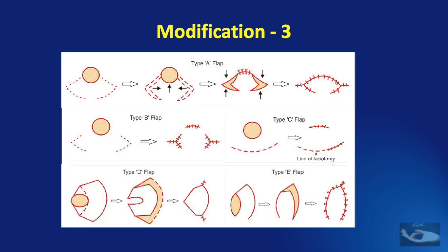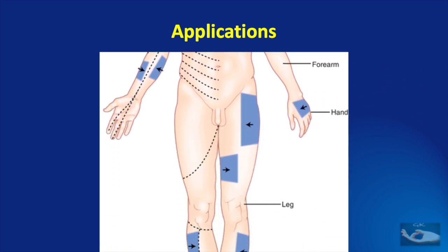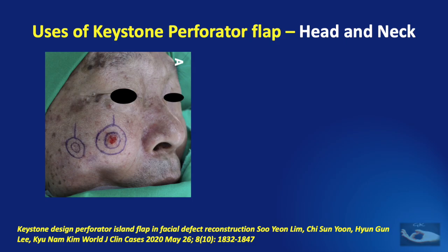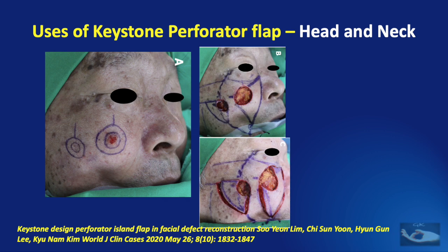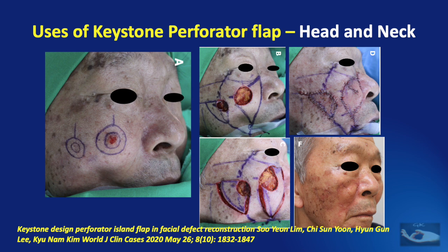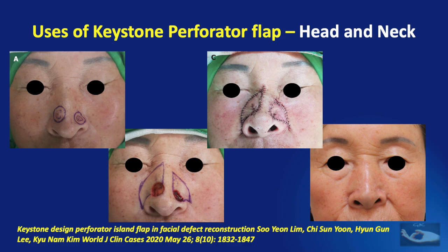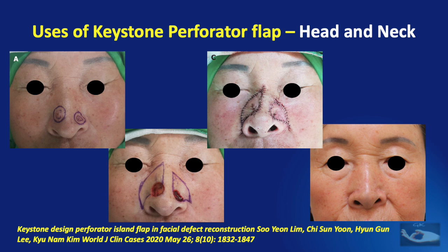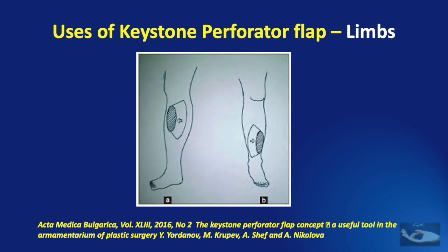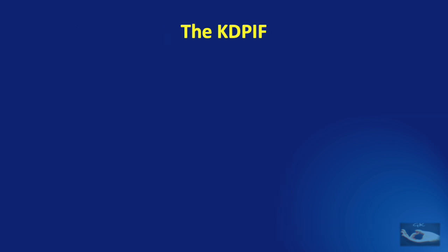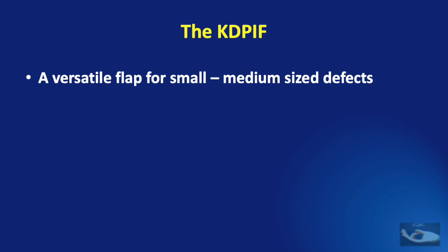Keystone Perforator Flaps find application for coverage of defects over the entire body, from head and neck to trunk and limbs. On the head and neck they can be used for resurfacing defects on the cheeks and the nose, as shown in literature examples where keystone flaps have been used on both sides. Use of these flaps is also ideal over the back and for defects on the upper and lower limbs. The keystone design perforator island flap is a versatile option for small to medium-sized defects and can be used anywhere in the body.